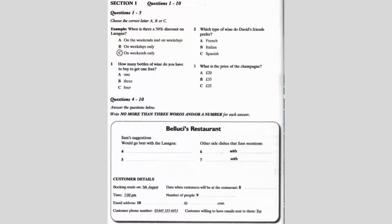You will hear a number of different recordings and you will have to answer questions on what you hear. There will be time for you to read the instructions and questions and you will have a chance to check your work. All the recordings will be played once only. The test is in four sections. At the end of the test you will be given ten minutes to transfer your answers to an answer sheet. Now turn to section one.